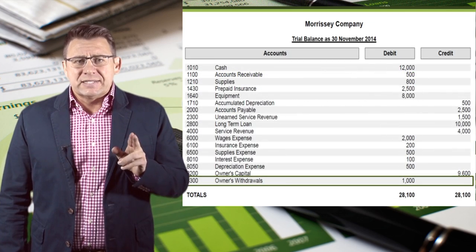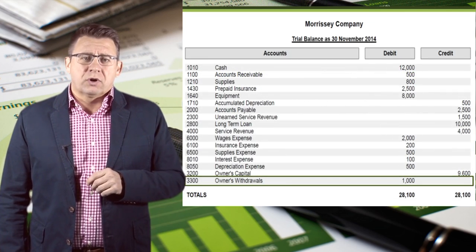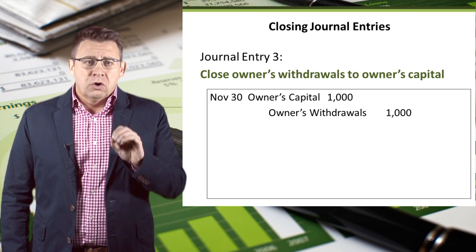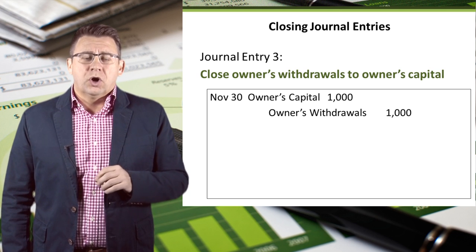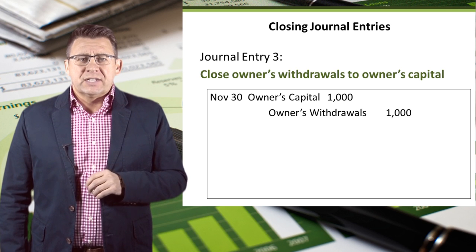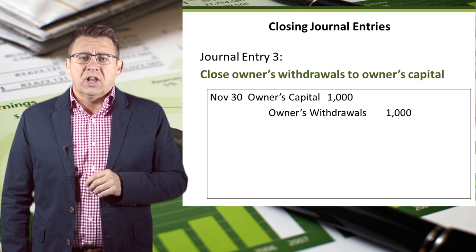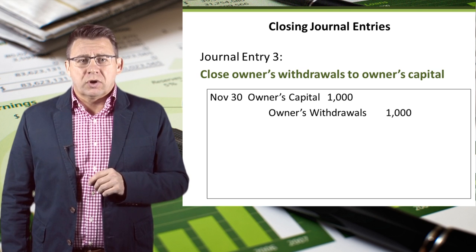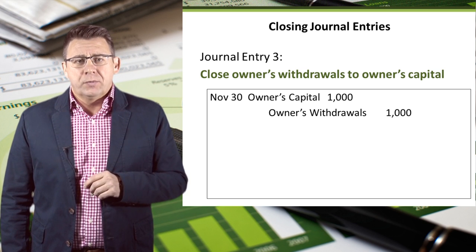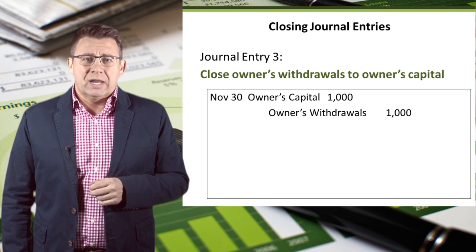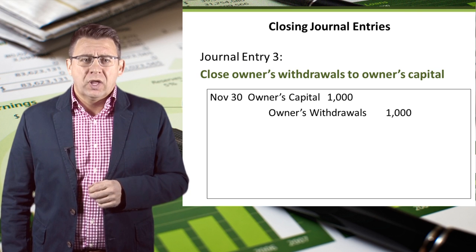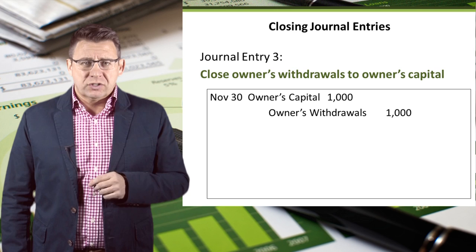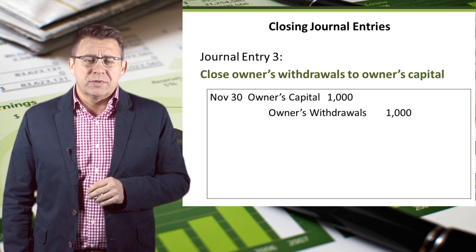The last temporary account to close is owner's withdrawals. So the final journal entry is to close owner's withdrawals to owner's capital. Since owner's withdrawals has a $1,000 debit balance, we will credit owner's withdrawals to make the balance zero. Owner's capital will then be debited. Note that owner's withdrawals is not an income statement account, so it is not closed to income summary first.